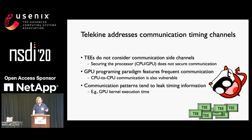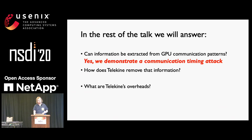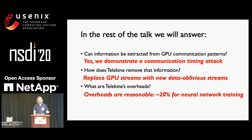I'm going to show you an attack that uses the timing of GPU kernels to leak information. The plan for the rest of the talk is to answer three questions. First, is this a real problem — can we extract information from GPU communication patterns? The answer is yes, and I'll show a concrete attack. Second, how does our system remove that information? I'll show a new primitive called data oblivious streams. Finally, what's the cost? I'll tell you upfront it's about 20% overhead for neural network training.